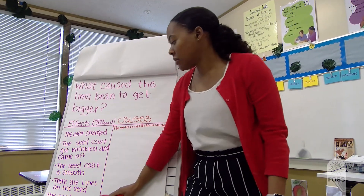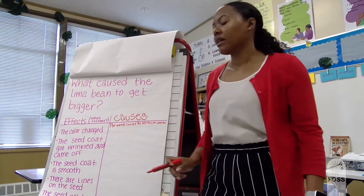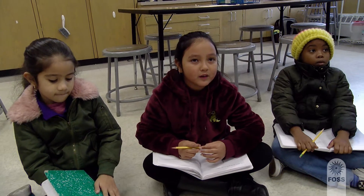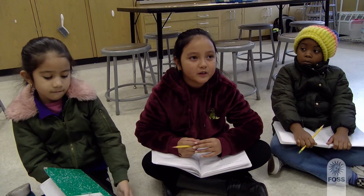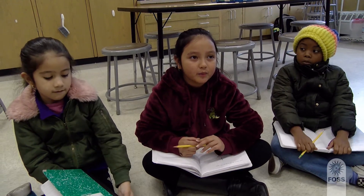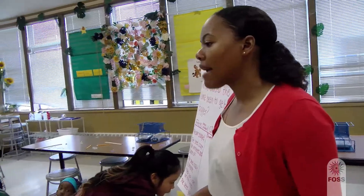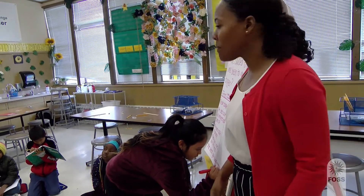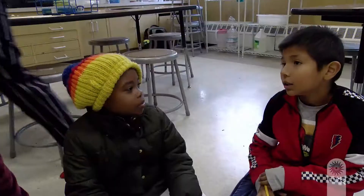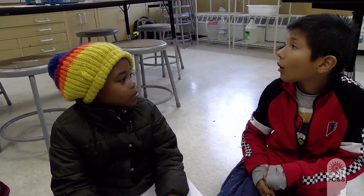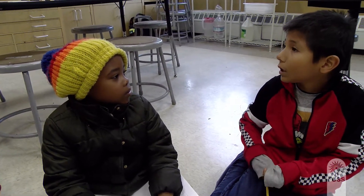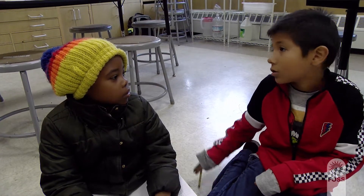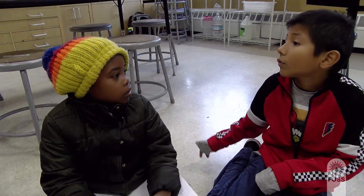Teacher: You guys in your group, I heard you discussing that the seed got bigger. What caused the seed to get bigger? Student: The water got inside the lima bean and soaked it up. Teacher: Can you write that down? What evidence do we have that supports the claim that the lima bean soaked up all the water? Student: Before, they were hard and small and white, and after, it's big and soft.